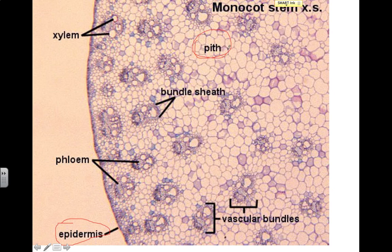Pith, as I circle it here, is very much like cortex — it's pretty much the same idea. It's the main structural cells that kind of fill the area within the stem, give it structure, help hold it up. Then you have vascular bundles that are in the stem. In a monocot stem, you're going to have scattered vascular bundles — they're going to be kind of all over the stem, randomly throughout it.